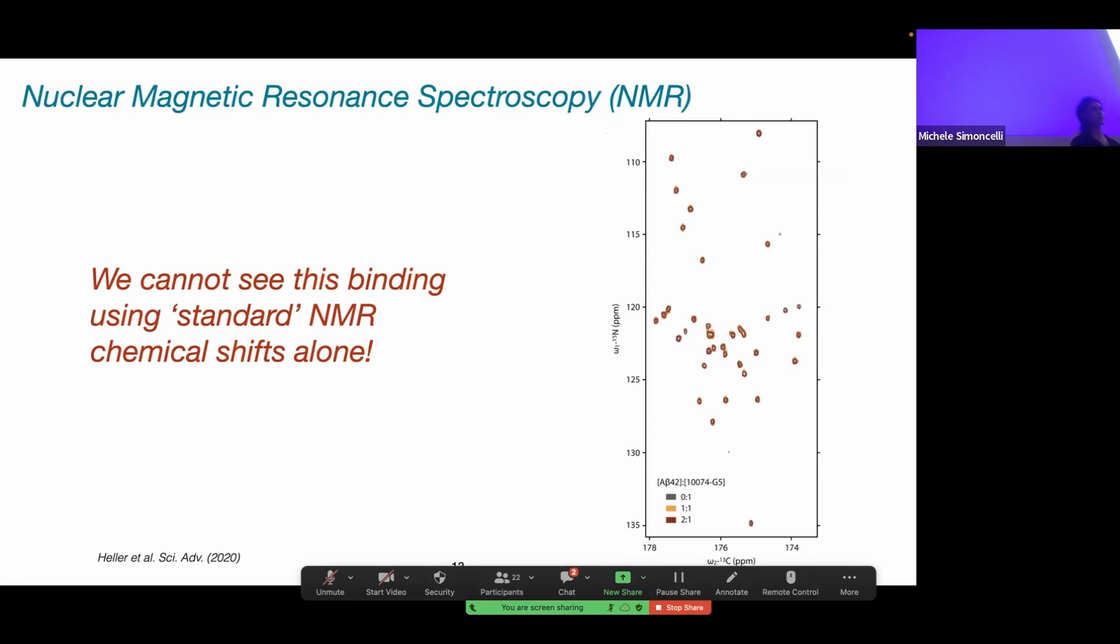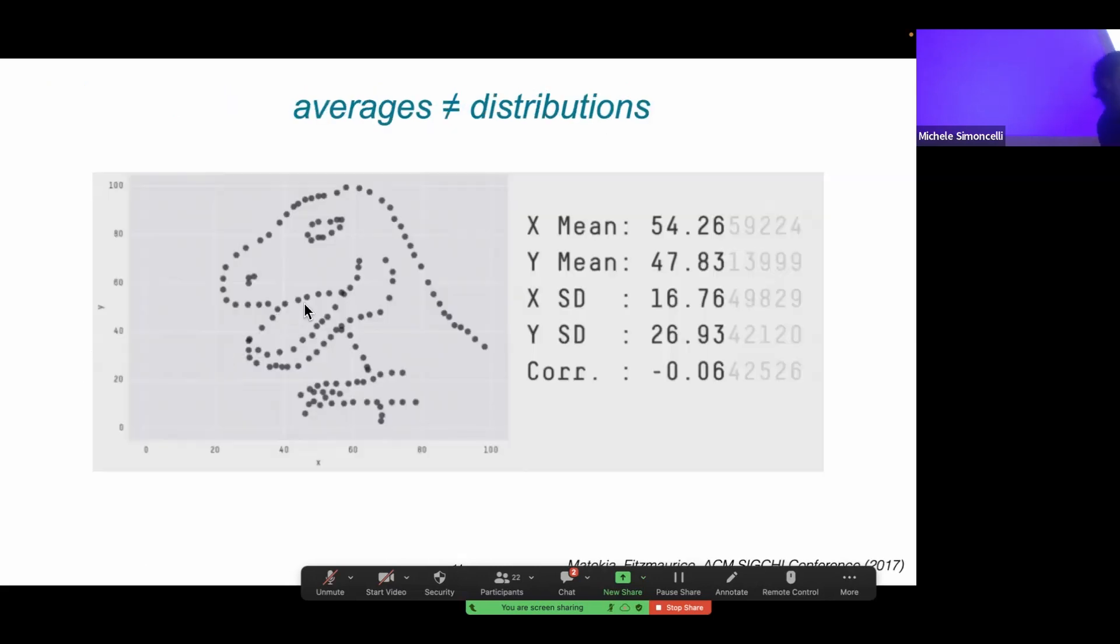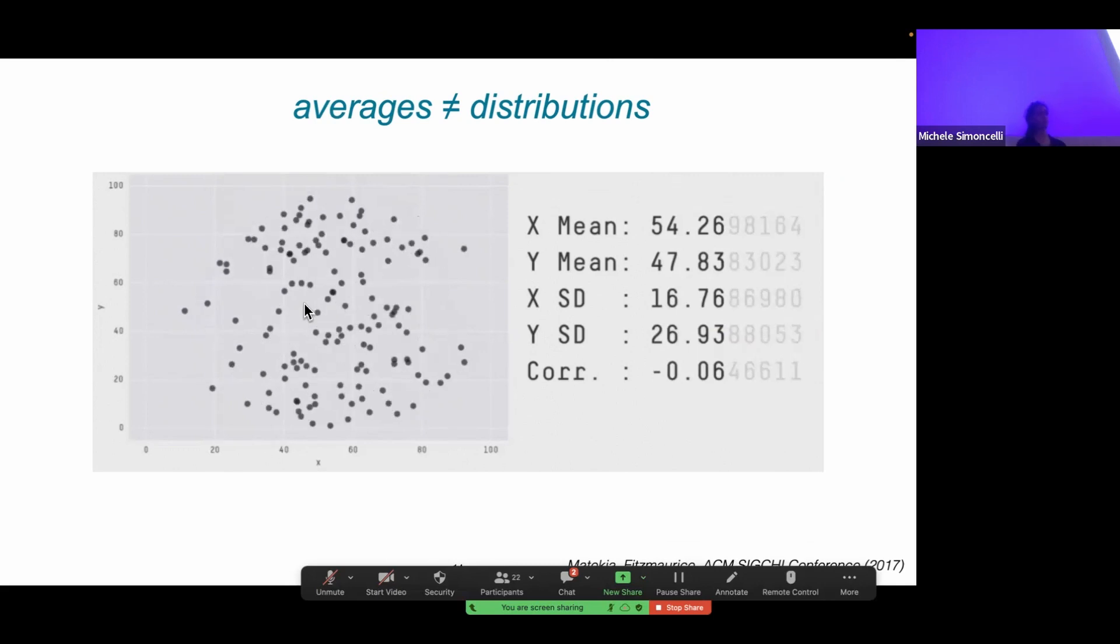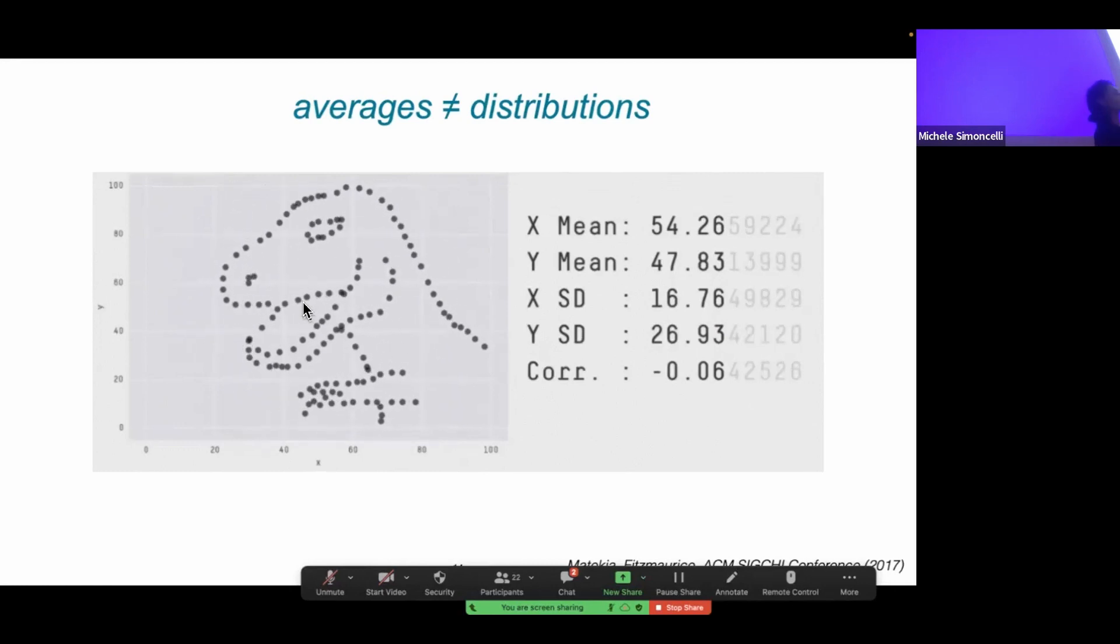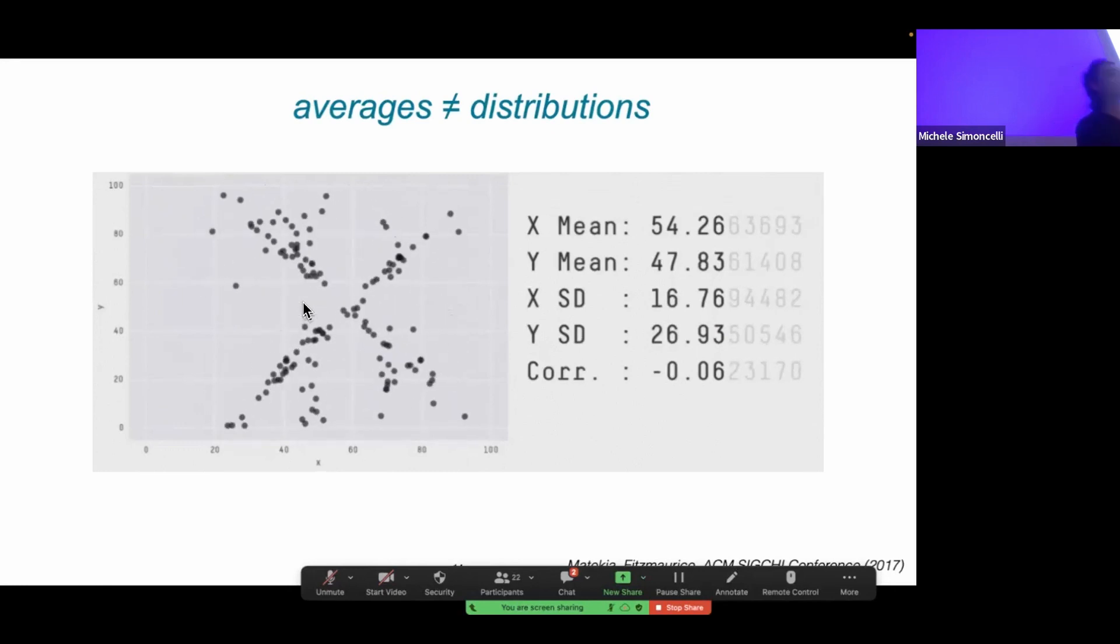But when we tried this experiment with our disordered protein, we don't see any changes. That was really puzzling to us. Why can we see this with some techniques and not others? Something I want to say about chemical shifts is that this is an ensemble average technique. We are measuring all of the molecules in our test at the same time, and we are getting an average picture. Averages are not the same as distributions. To illustrate that point, all of these points have nearly the same average or mean in the X and Y dimensions. They also have almost the same standard deviations in both of these dimensions. But what we can see is that the distributions themselves are very, very different.